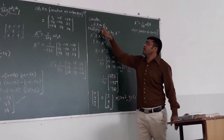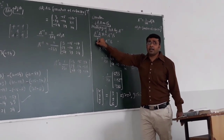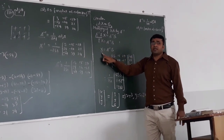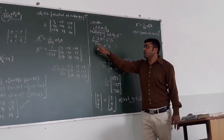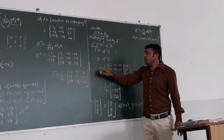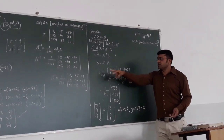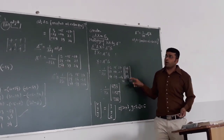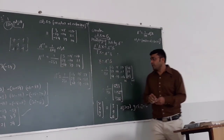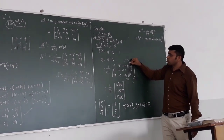By the definition of the inverse, A inverse × A = I (identity matrix), and I × X = X. Therefore, X = A inverse × B. Here B is the right-hand side constant column matrix: [48, 18, 21]. We now perform the matrix multiplication of A inverse (3×3) by B (3×1).